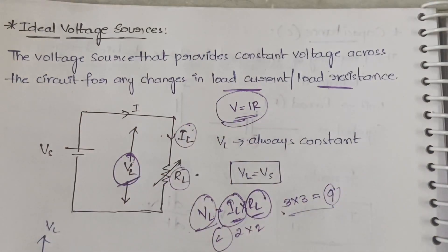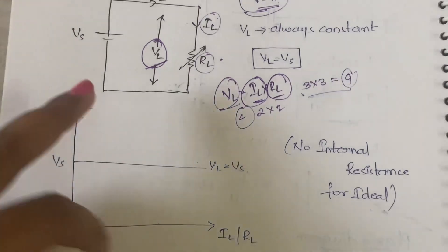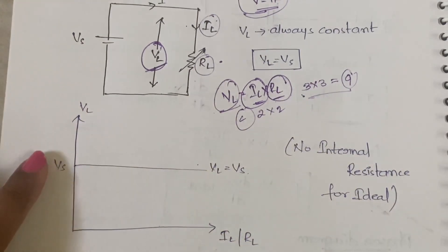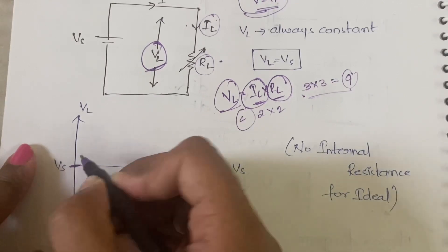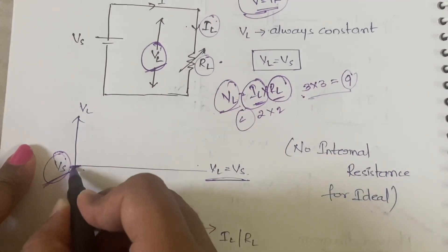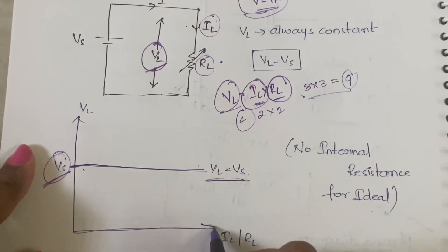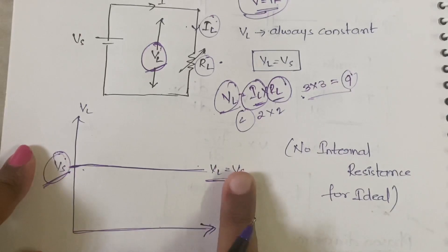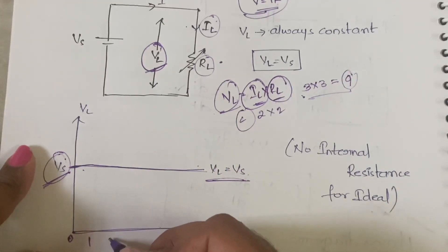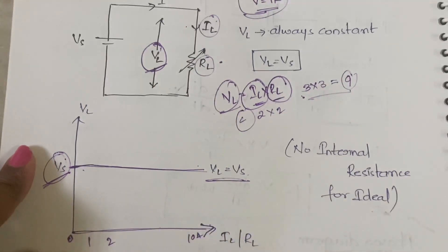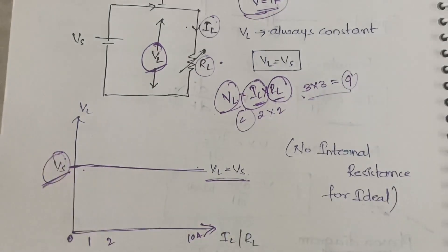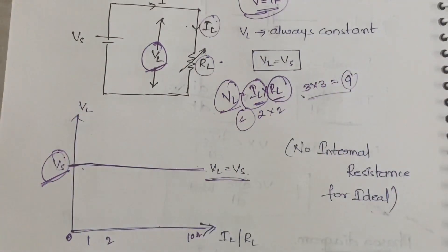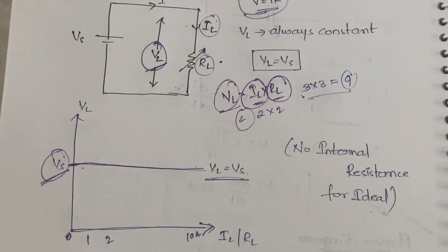For the ideal voltage source, the graph plots IL or RL on the x-axis and load voltage VL on the y-axis. VL remains at Vs — a straight horizontal line — irrespective of current being 0, 1 amp, 2 amps, or 10 amps. In ideal voltage source, we don't have the concept of internal resistance, which will come up in the practical voltage source.